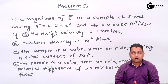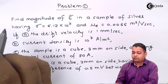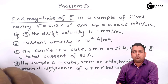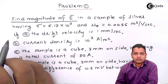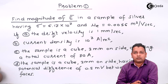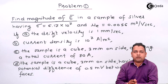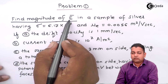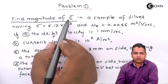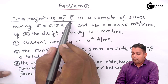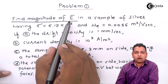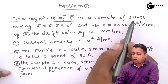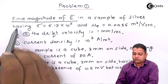Reading the problem statement — we are asked to find the magnitude of E-bar, which we represent for electric field intensity, also called the strength of electric field. If the source has a higher magnitude of charge, the electric field is stronger, so the electric field intensity will also have a higher value. We are asked to find the magnitude of E-bar for a sample of silver material.